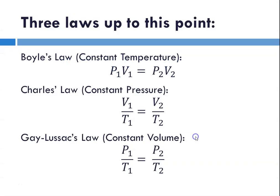Now up until this point we have talked about three laws. Boyle's law, which is at constant temperature, and we said that pressure and volume have an inverse relationship. If one goes up the other one goes down, that means that when you multiply them together you get a constant. So we write that as P1 V1 equals P2 V2.